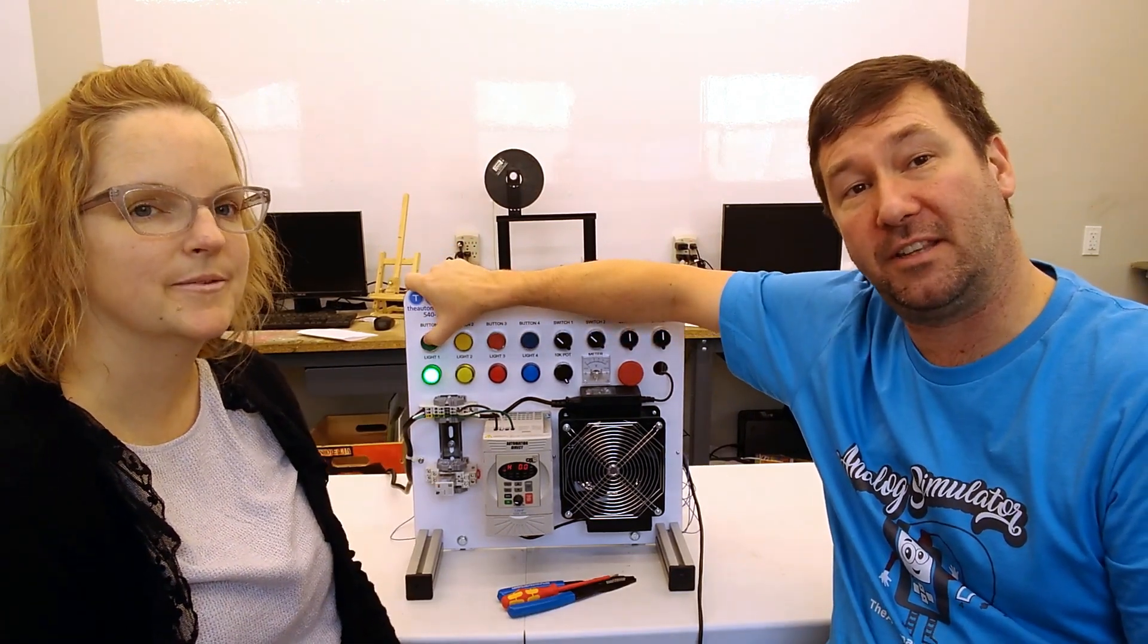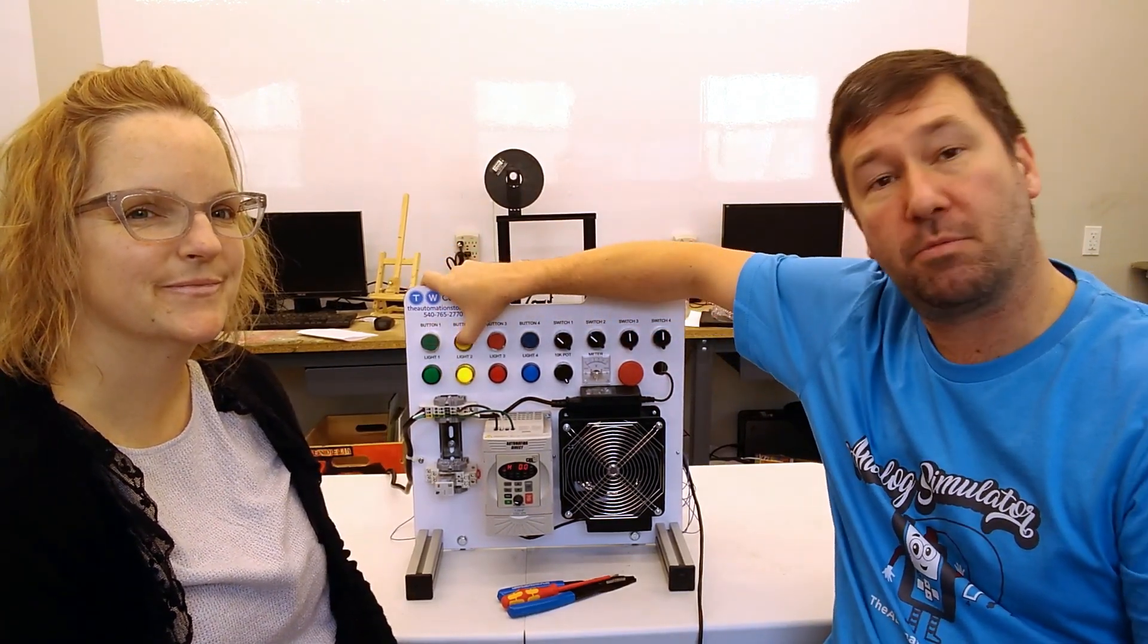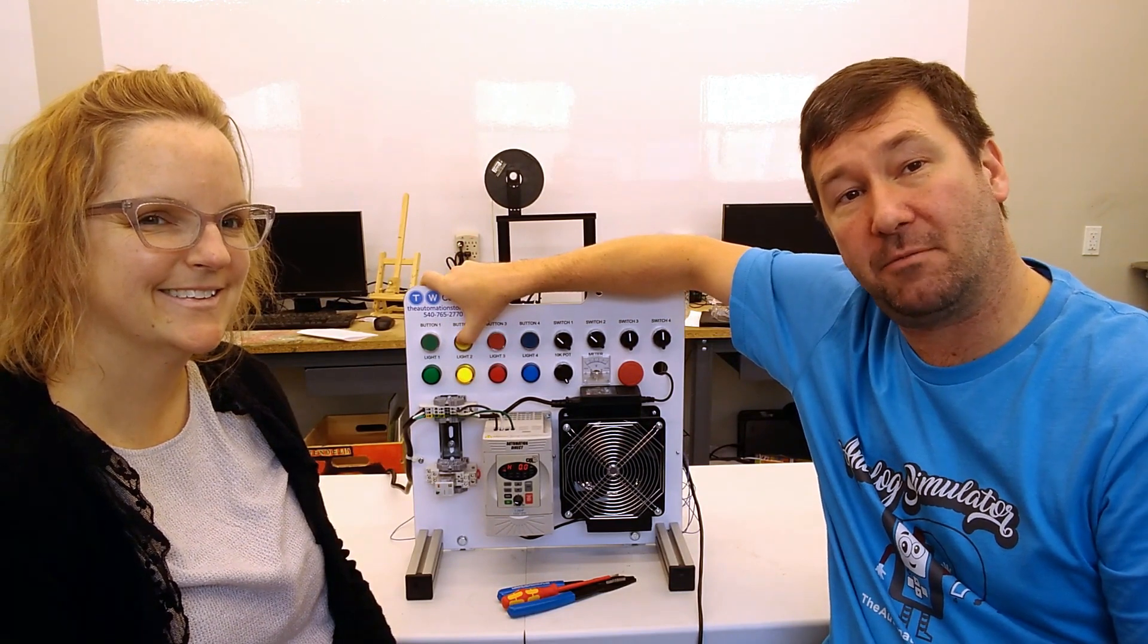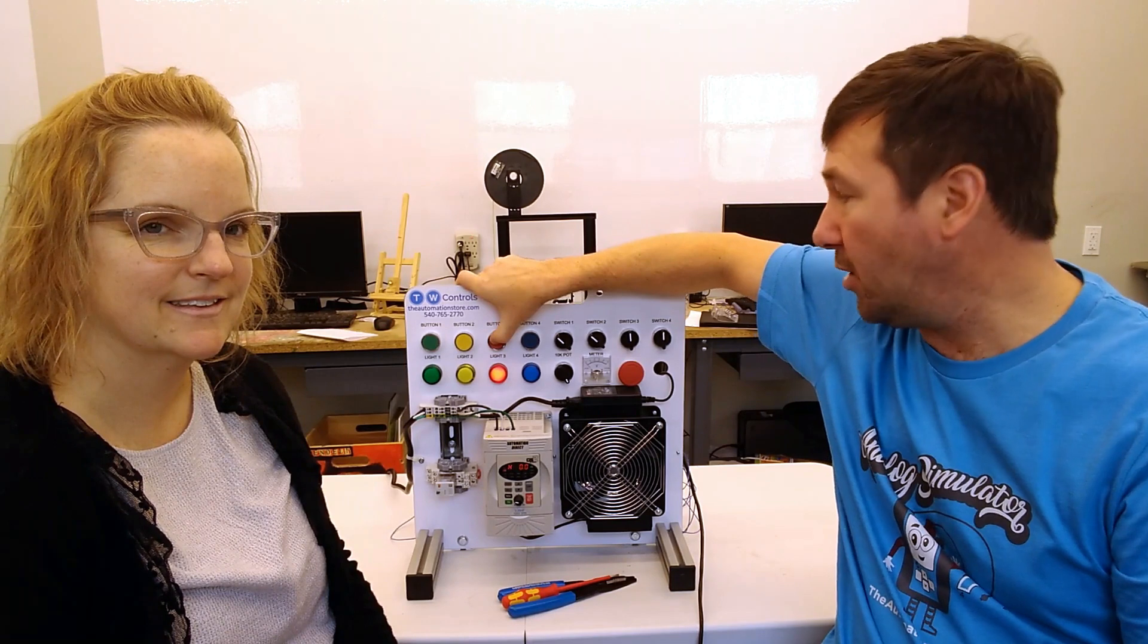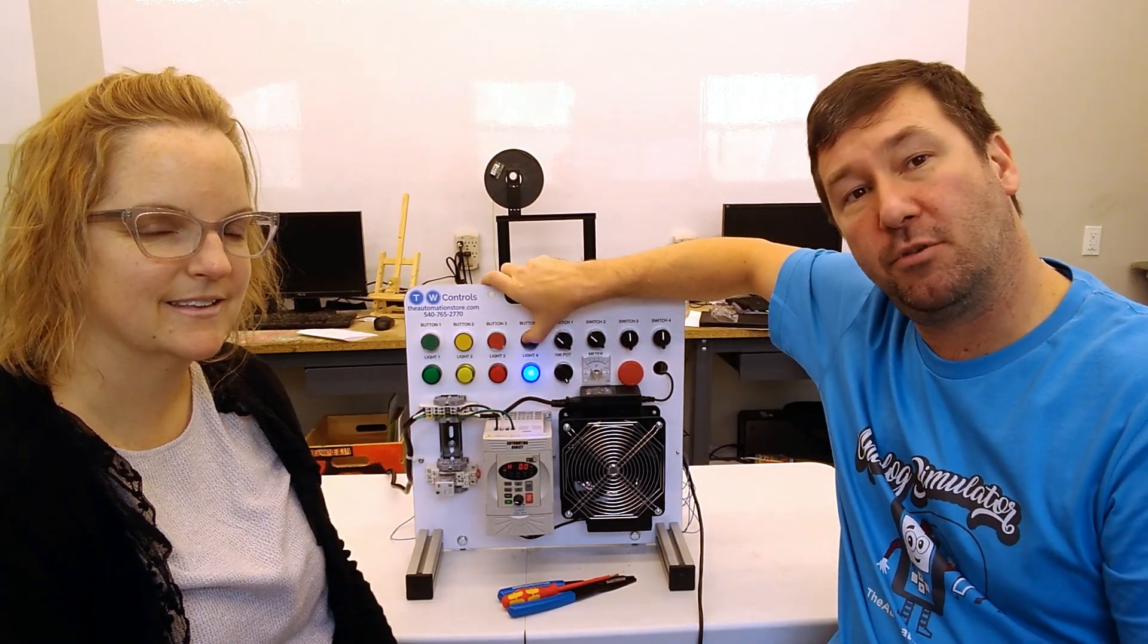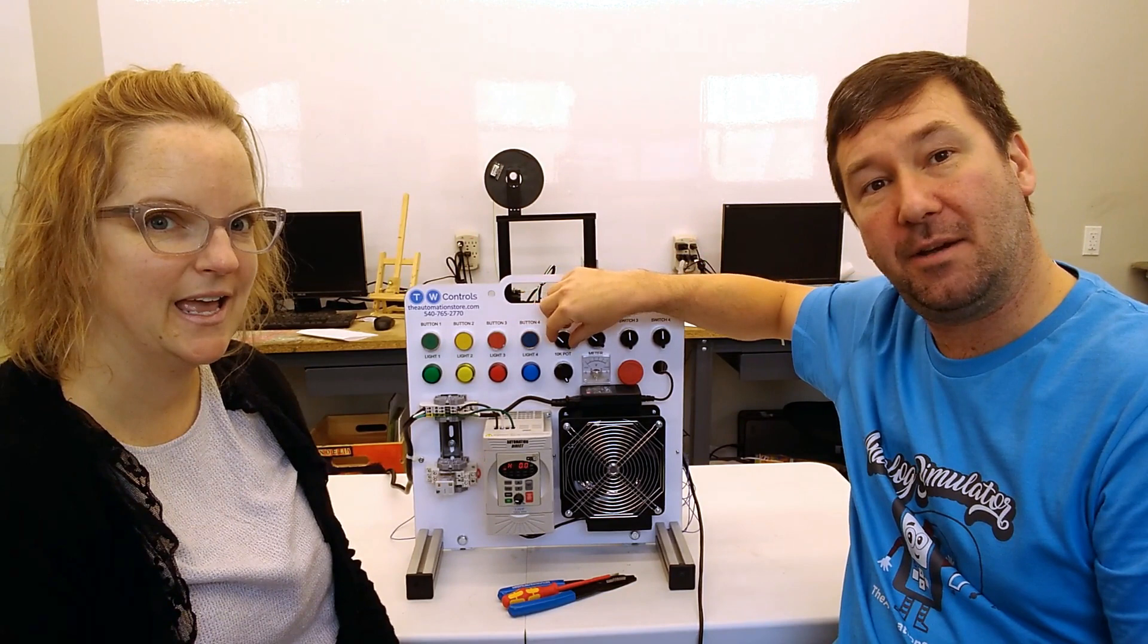When you press the green button, the green light will come on. When you press the yellow button, the yellow light will come on. When you press the red button, the red light will come on. And when you press the blue button, the blue light will come on.